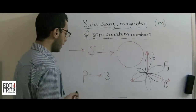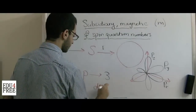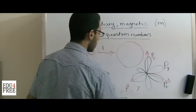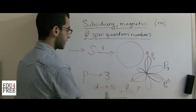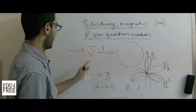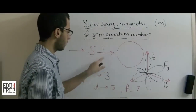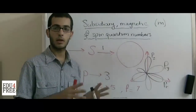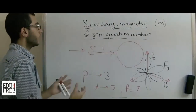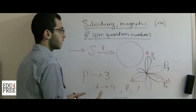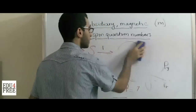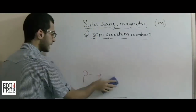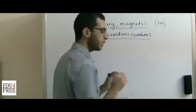The D level contains 5 orbitals and the F level contains 7 orbitals. It gets more complex as we move from S to P to D to F: 1, 3, 5, and 7. The shapes of the D and F orbitals are complex. The principal quantum number, the subsidiary quantum number, and the magnetic quantum number all together express the number of orbitals.